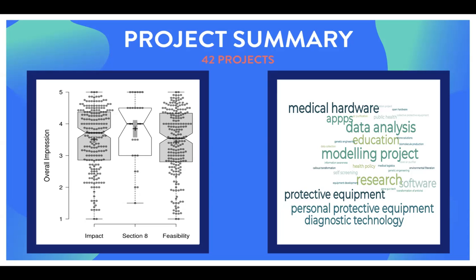Chris has been doing the analysis. On the left-hand side you can see the overall impression from reviewers across all projects — two pieces of information: impact, from the first half of the review form, and feasibility from the second half. We also take a third parameter, section eight, for projects that have already applied previously — they need to be even higher quality and demonstrate some impact and progress. On average, people tend to score just over 3.5 on impact and slightly lower on feasibility.